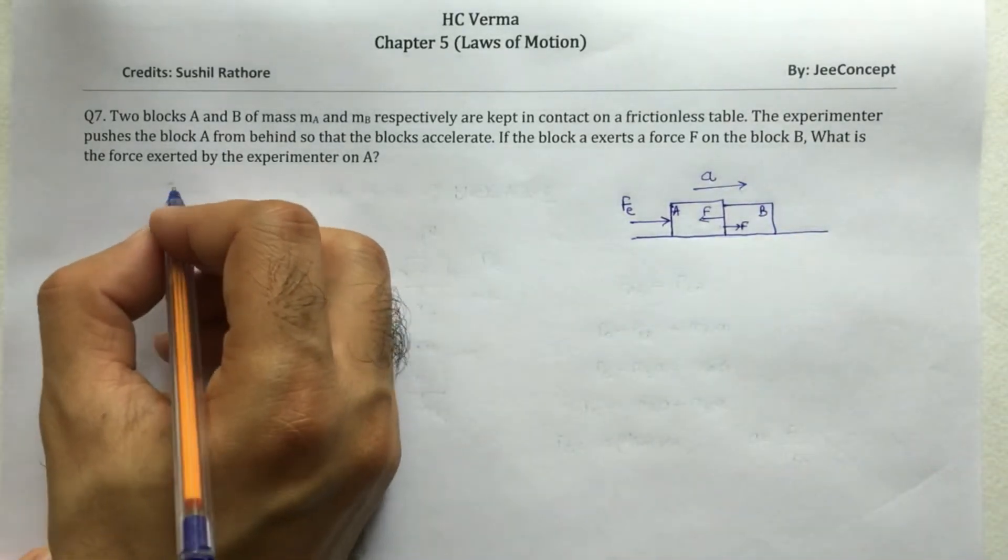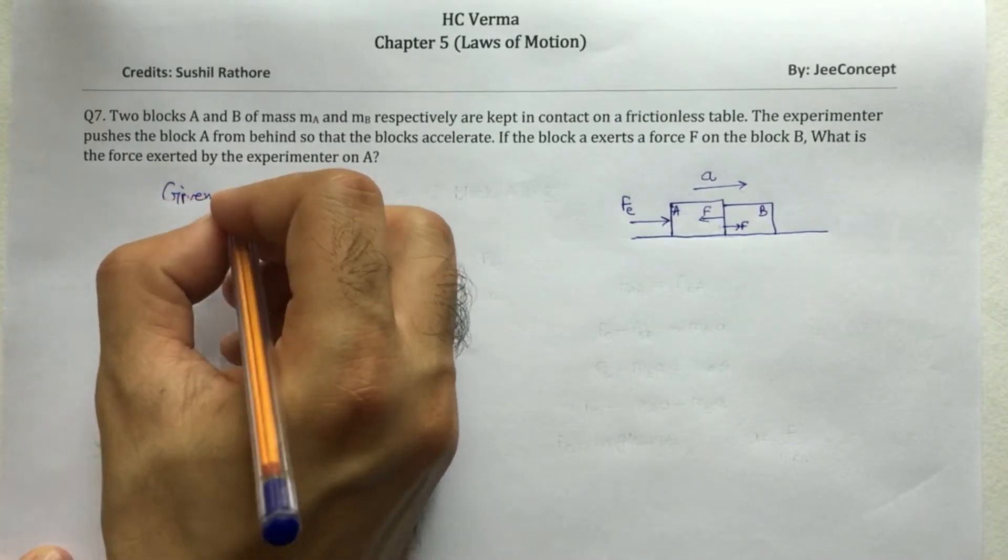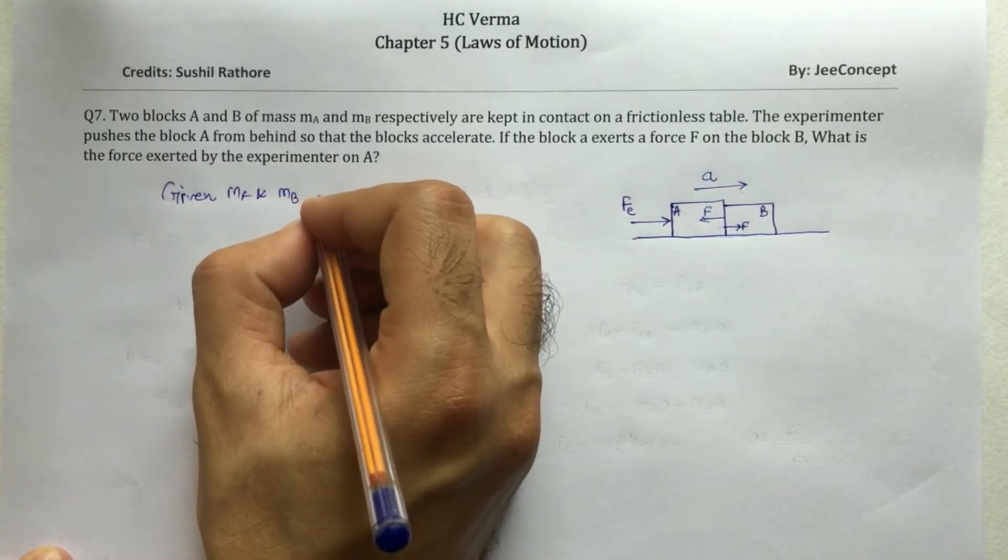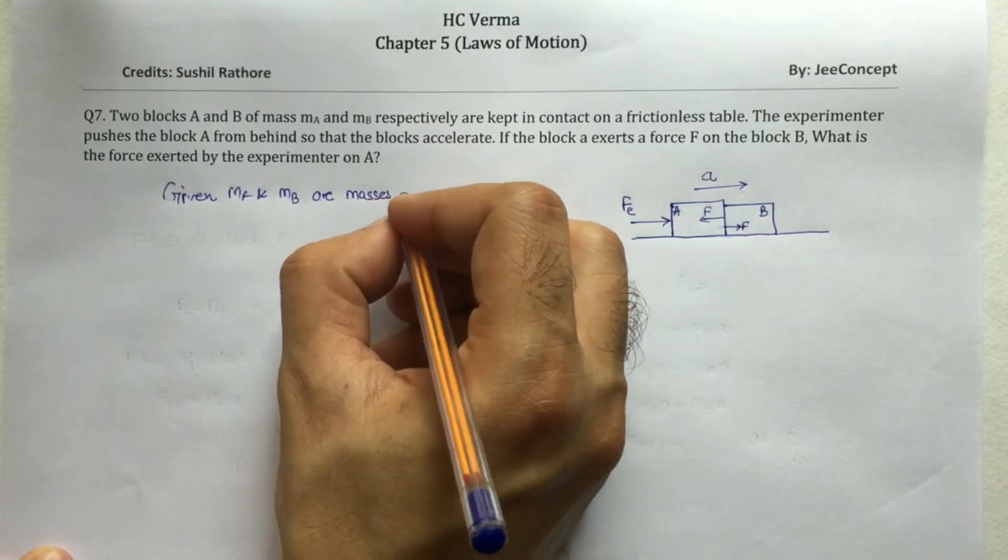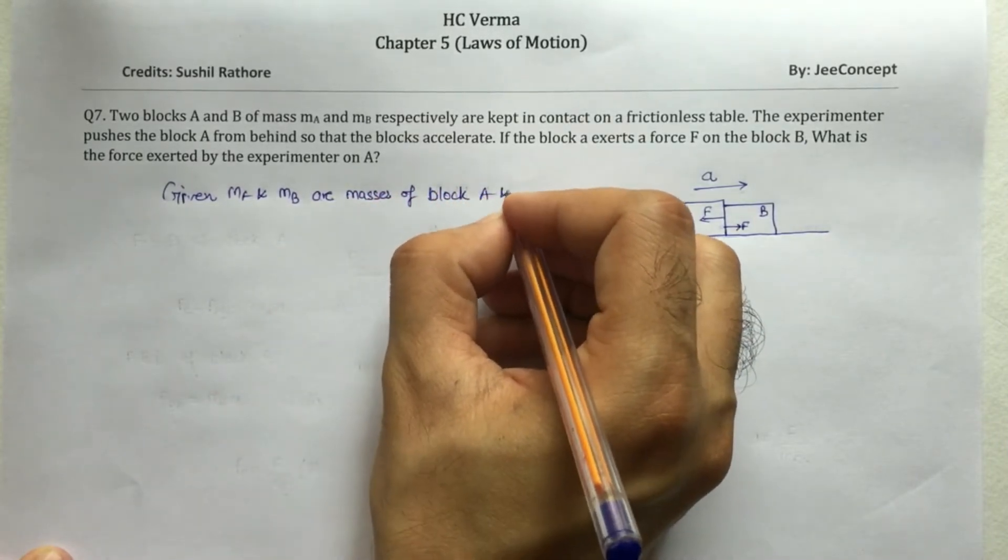Now given MA and MB are masses of block A and B.